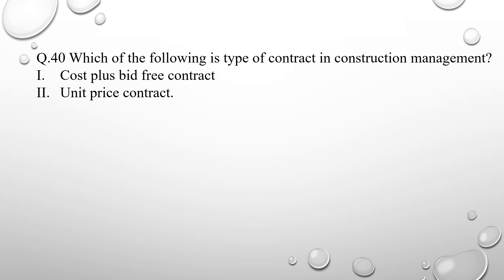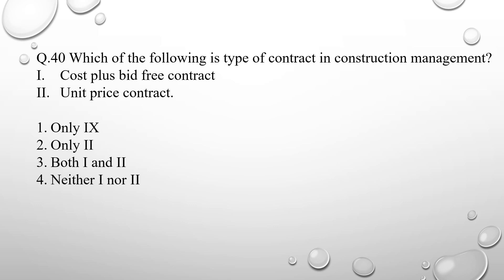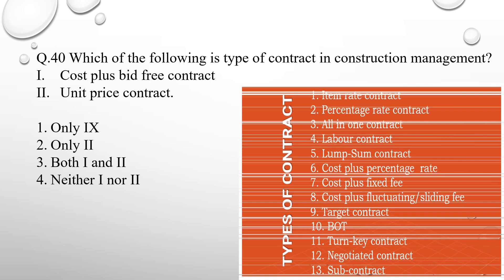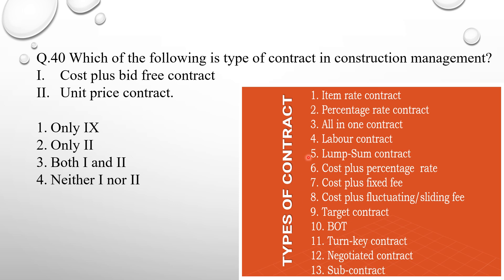Question number 40: which of the following is a type of contract in construction management? Cost plus bid fee contract and unit price contract are both types of contracts, so option number 3 (both first and second) is correct. Other types include item rate contract, percentage rate contract, all-in-one contract, labor contract, lump sum contract, cost plus percentage rate contract, cost plus fixed fee contract, target contract, BOT, turnkey contract, negotiated contract, and subcontract.